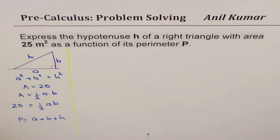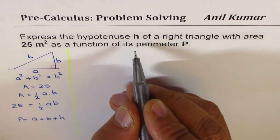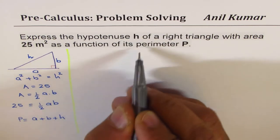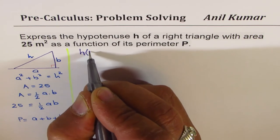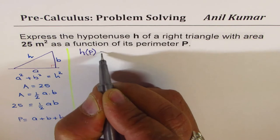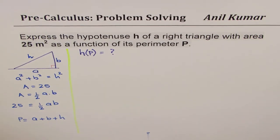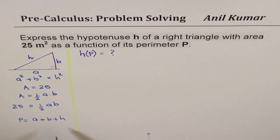And what we need to do here is we have to write hypotenuse as a function of p. That means we want to know what is hypotenuse as a function of p. This is what we need to figure out. How can we do it? That is the major question.